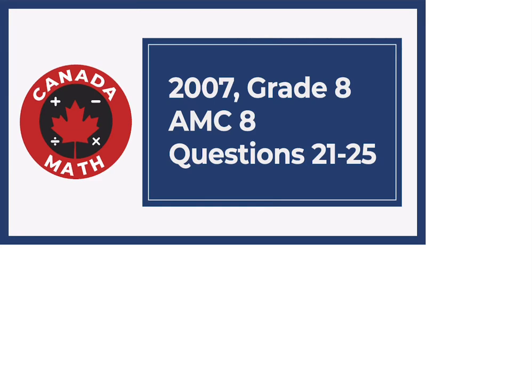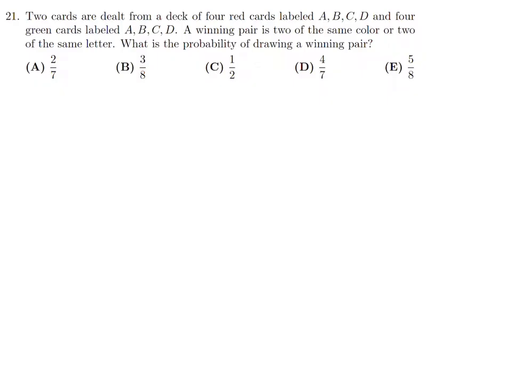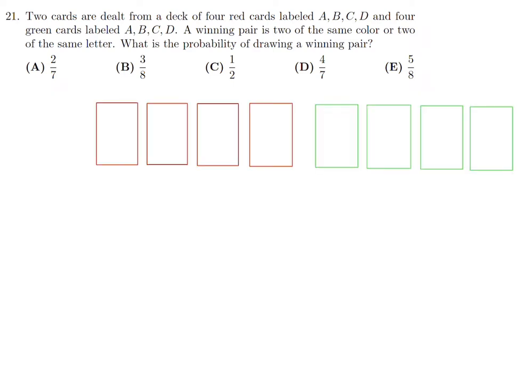Questions 21 to 25 on the 2007 grade 8 AMC 8. Two cards are dealt from a deck of four red cards labeled A, B, C, D and four green cards labeled A, B, C, D. A winning pair is two of the same color or two of the same letter. What is the probability of drawing a winning pair? These are our cards: A, B, C, D for the red and A, B, C, D for the green.